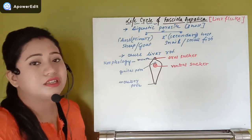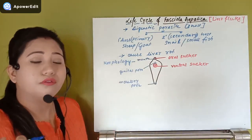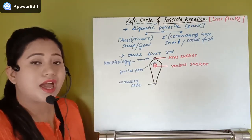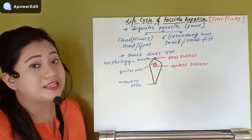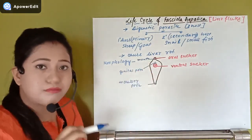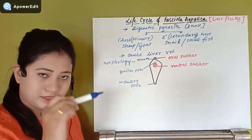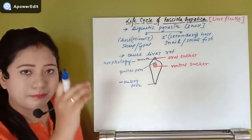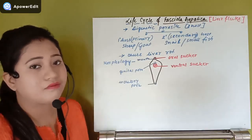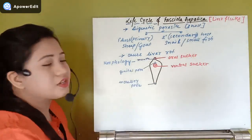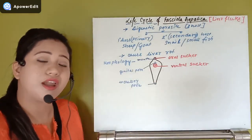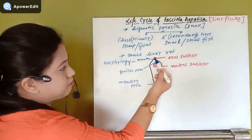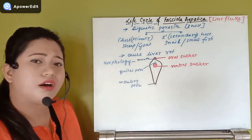This organism belongs to phylum Platyhelminthes, where the digestive system is incomplete. They do not have a complete digestive system — they have a blind-sac body plan. They have a mouth through which food enters, but inside they have only a gastrovascular cavity, not a complete alimentary canal, because there is no separate anus.